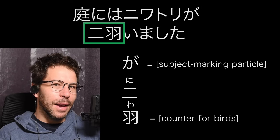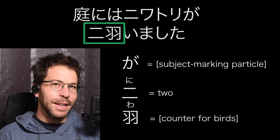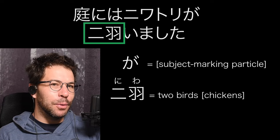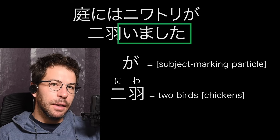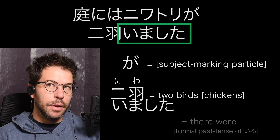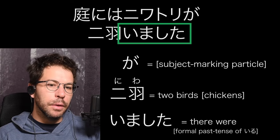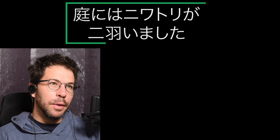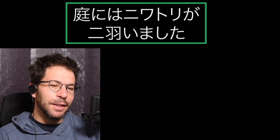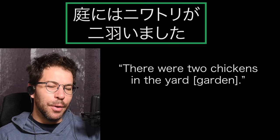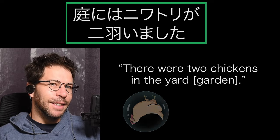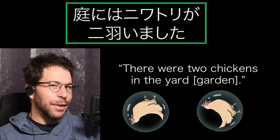After that she says Niwa. Wa is a counter for birds, and Ni means two. So Niwa means two birds. And then Imashita is just 'there were' — it's the past tense of iru. So Niwa Niwa Niwatori ga Niwa Imashita means 'there were two chickens in the yard or in the garden.'